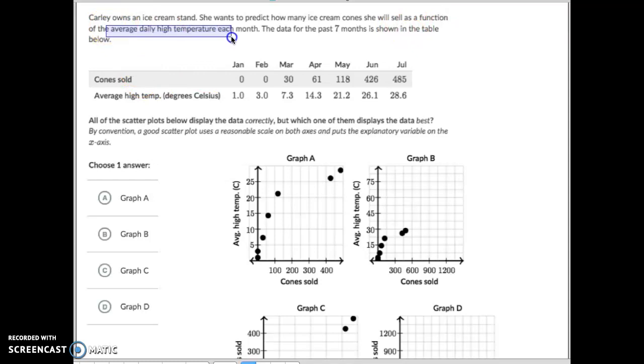Gee, the warmer it gets, the more ice cream I sell. The colder it gets, I'm not going to sell a lot of ice cream. So in this case, the daily average temperature is going to be our x-axis.